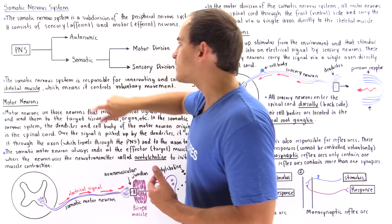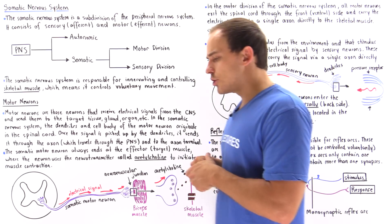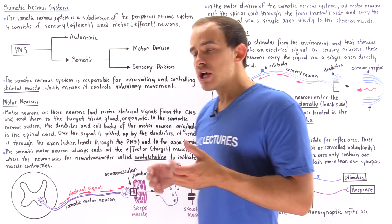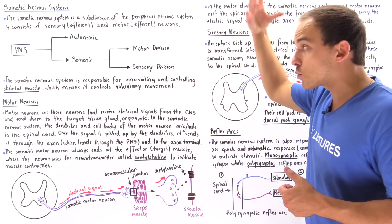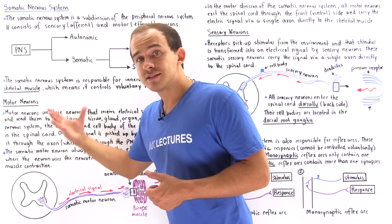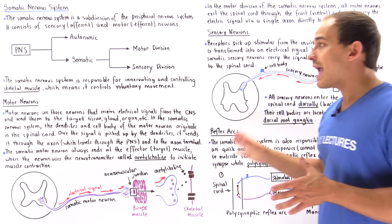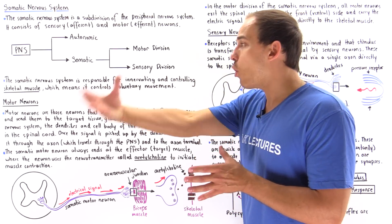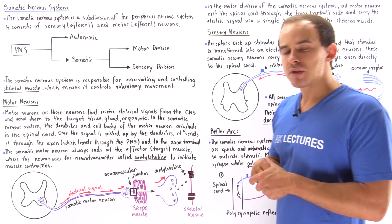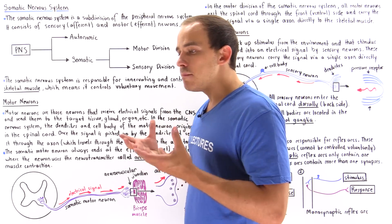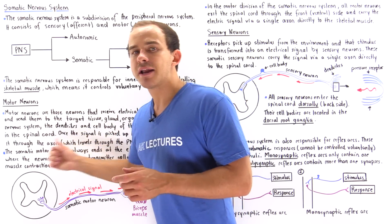Let's discuss the motor neurons found in the somatic nervous system. Motor neurons are those neurons that accept signals from the central nervous system — the brain or the spinal cord — and send these signals to the target tissue, gland, organ, or muscle. In the case of the somatic nervous system, the target organ is always skeletal muscle. The dendrites and the cell body of the motor neuron always originate in the spinal cord.